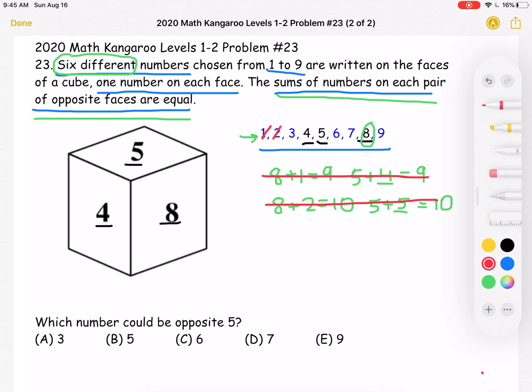Now let's look at 3. If we have the 3 opposite the 8, then we have a sum of 8 plus 3, which is equal to 11. Now let's think what can go opposite the 5 in this case. We have 5 plus the number opposite it must be equal to 11. 5 plus what is equal to 11? Well, we know that 5 plus 6 is equal to 11.